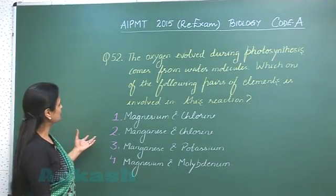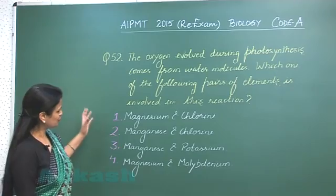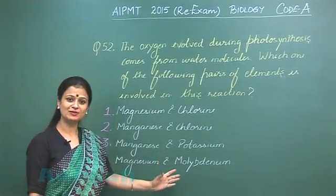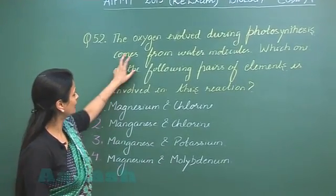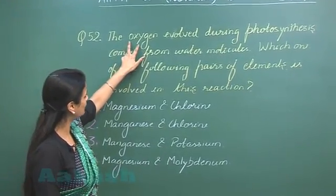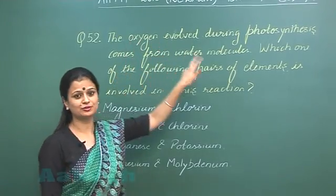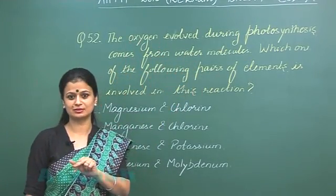Let's discuss question number 52. We have to select which of the following pair of elements are involved in evolution of oxygen during photosynthesis.